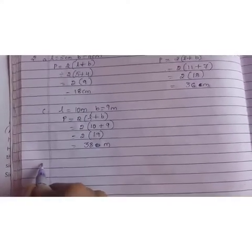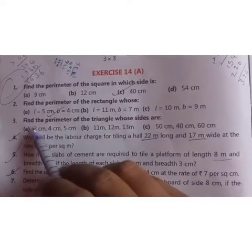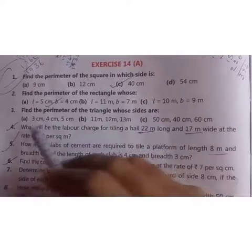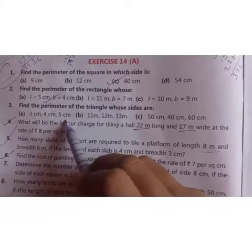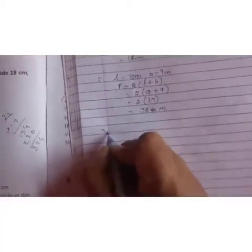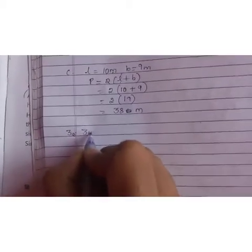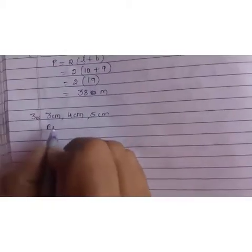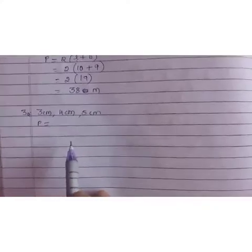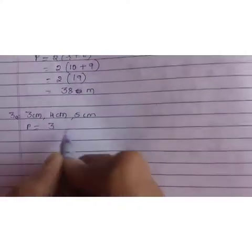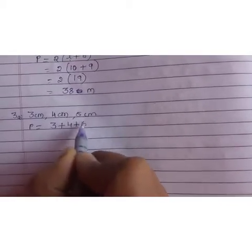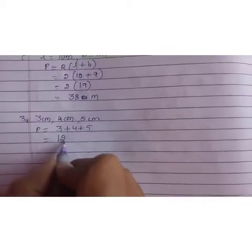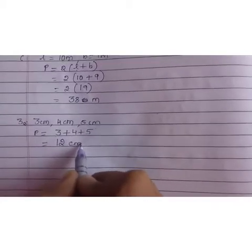Now, let us move to question number 3. Find the perimeter of the triangle whose sides are A, 3 centimeters, 4 centimeters and 5 centimeters. Let us note it down. So how will you find the perimeter? Perimeter equals sum of all the sides. All the sides is nothing but 3 plus 4 plus 5. No specific formula. So directly add. 3 plus 4 is 7. 7 plus 5 is 12. And the unit is centimeters. So write centimeters.